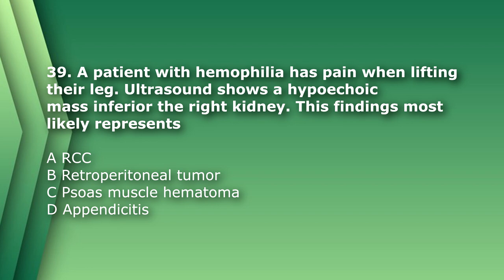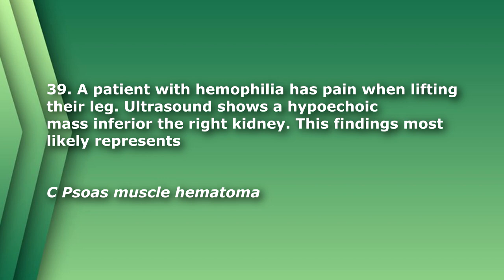Number 39. A patient with hemophilia has pain when lifting their leg. Ultrasound shows a hypoechoic mass inferior to the right kidney. This finding most likely represents: A. Renal cell carcinoma. B. Retroperitoneal tumor. C. Psoas muscle hematoma. D. Appendicitis. A renal cell carcinoma is usually a tumor within the kidney. A retroperitoneal tumor can be a hypoechoic mass inferior to the right kidney. Appendicitis is usually seen as a non-compressible, blind-ending tubular structure. Given the patient's history, the most likely answer is C, psoas muscle hematoma.